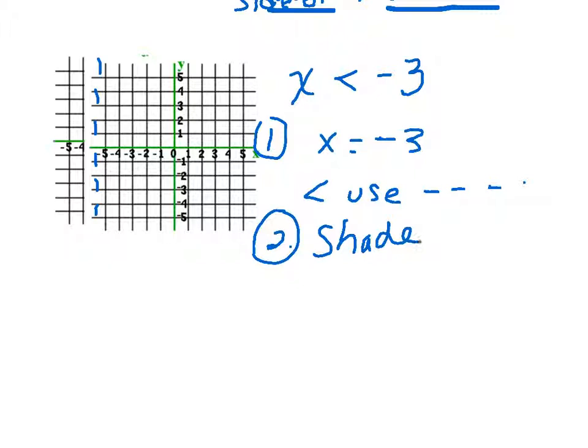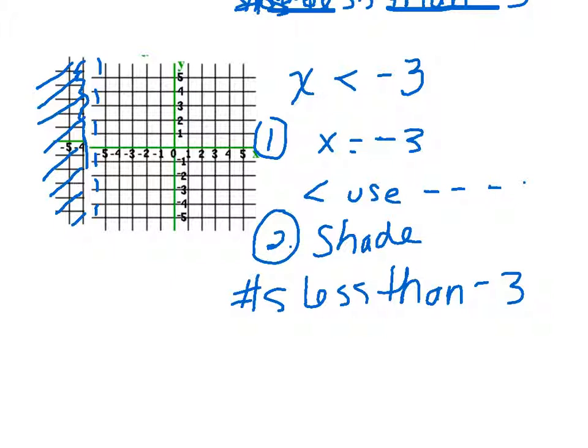Second step is which side do we shade on? They're asking us to shade all numbers less than negative 3. Is that going to be to the right of the dotted line or to the left? Well, it's going to be all these numbers because these numbers are all less than negative 3. So you just want to throw in that shading and that's it.